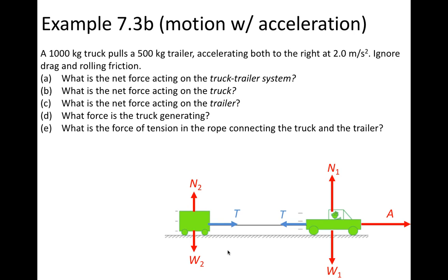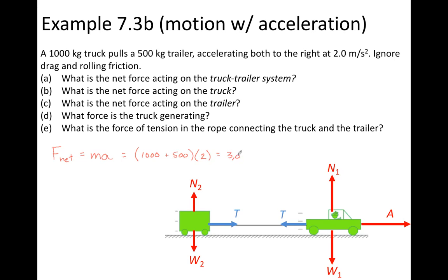To find the net force acting on the truck-trailer system, we just need to use Newton's second law: the net force equals mass times acceleration. We can apply this to a system of objects. Applying it to our two-object system — the truck and the trailer — the mass is going to be the total mass, 1000 plus 500, times the acceleration of 2 meters per second squared. So the net force acting on the truck-trailer system is going to be 3000 newtons.